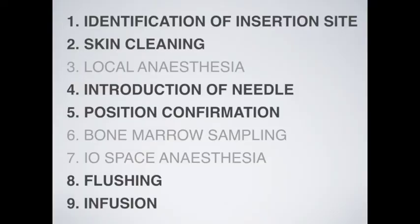Let's now summarize all the steps of IO access — steps colored in light grey are not obligatory. First, identify the insertion site and clean it. Administer local anesthesia if pain on insertion is expected. Insert the needle and confirm its position. Potentially obtain bone marrow samples and administer local anesthetic inside the bone. Finally, flush the IO needle and start administering fluids and medication under pressure.